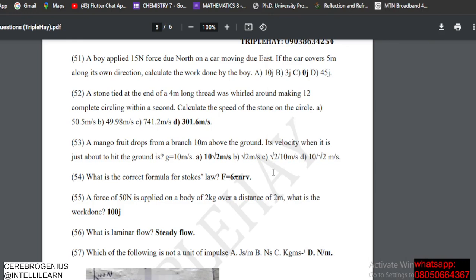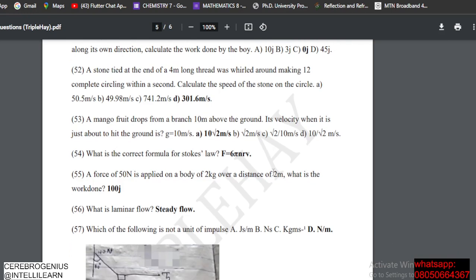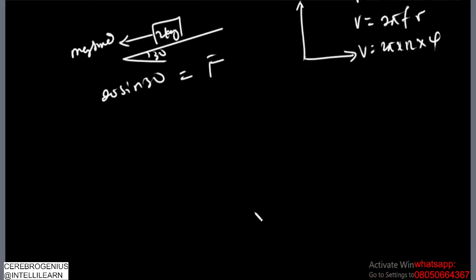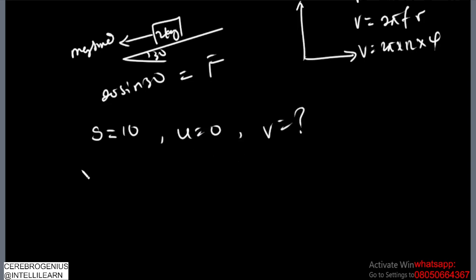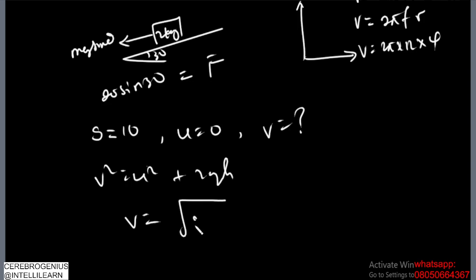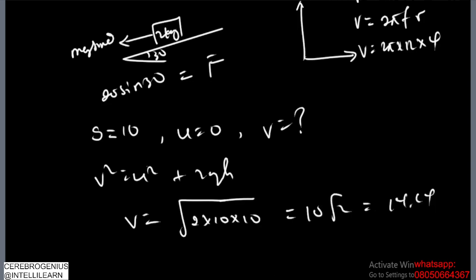A mango fruit drops from a branch 10 meters above the ground — find the velocity just before it hits the ground. The initial velocity is zero. Using v² = u² + 2gh: v = √(2 × 10 × 10) = √200 = 10√2 ≈ 14.14 m/s.